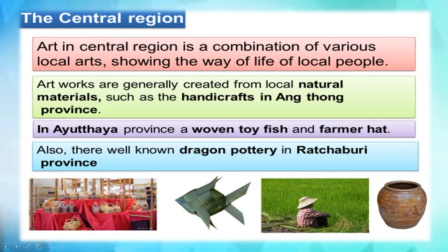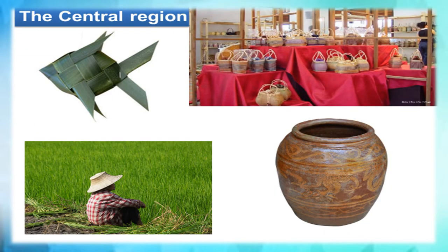Art in the central region is a combination of various local arts showing the way of life of local people. Artworks are generally created from natural materials, such as handicrafts in Ang Thong province, a woven toy fish and a farmer hat made of coconut leaves in Ayutthaya province, and well-known dragon pottery in Ratchaburi province. All central region local artworks are made from natural materials such as coconut leaves, clay, bamboo, or different kinds of leaves found in the local area.